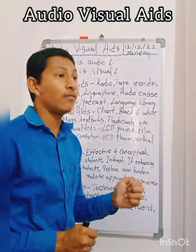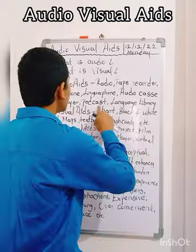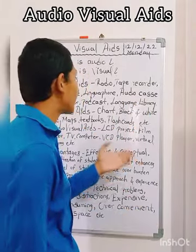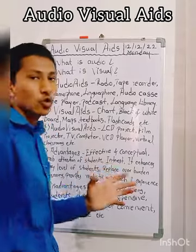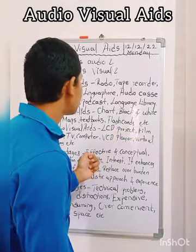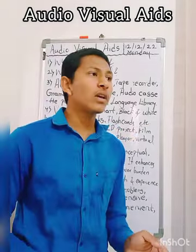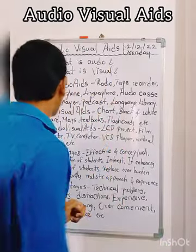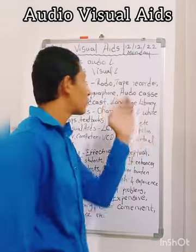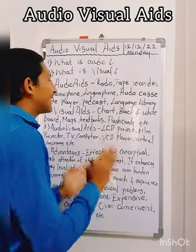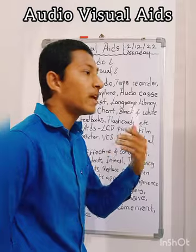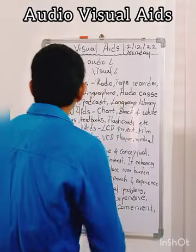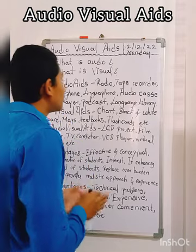Audio cassette players are things you can hear. Language library is also an audio aid — when someone reads or expresses something and you listen to it, that is called a language library. Now, coming to visual aids — we have discussed audio aids, and now it is time to understand what visual aids are.